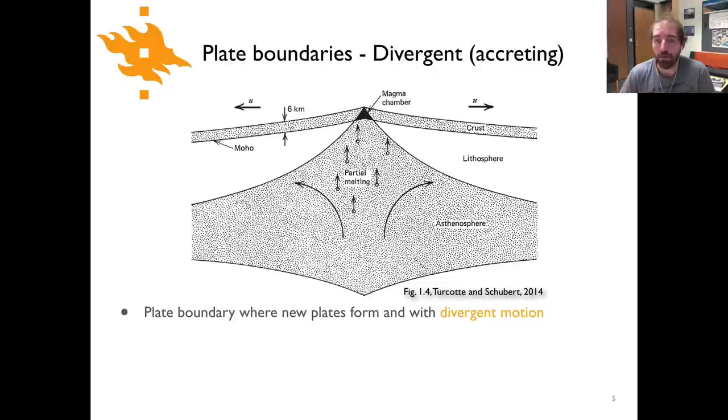So here we have a cross-sectional view through a spreading center or divergent plate margin in the middle of an ocean basin. This is a figure out of the Turcotte and Schubert geodynamics textbook and shows the main features of a divergent plate boundary. This is where we're forming new plates with divergent motion, shown with the vector u on one side of the spreading ridge and a vector of equal magnitude and opposite direction on the other side, showing our two plates that are forming above the spreading center and moving away from one another.